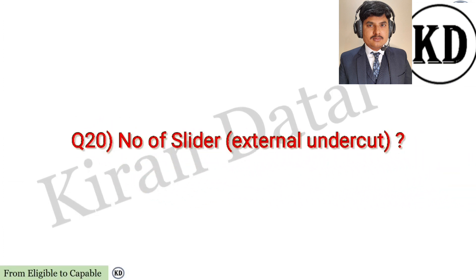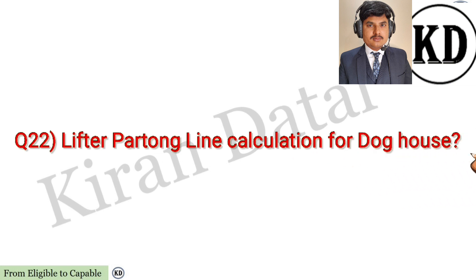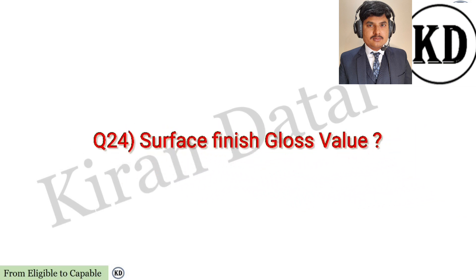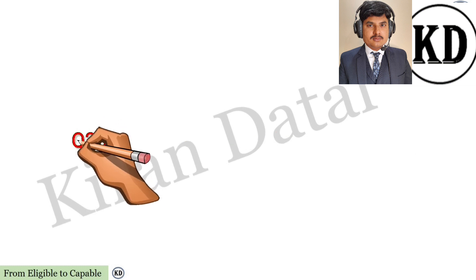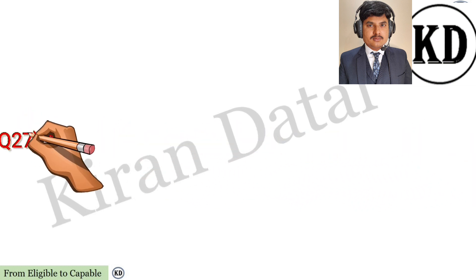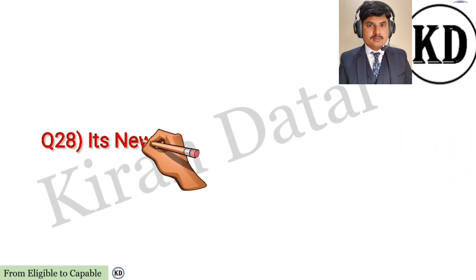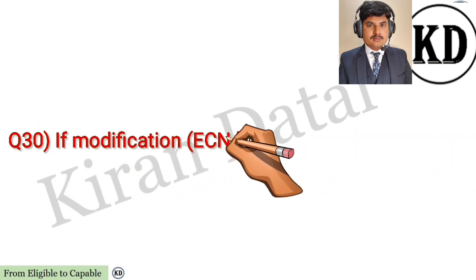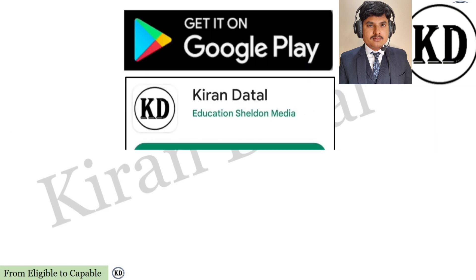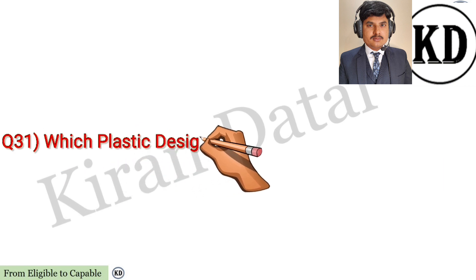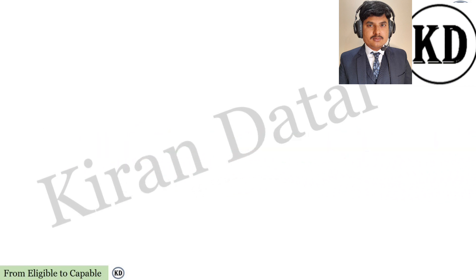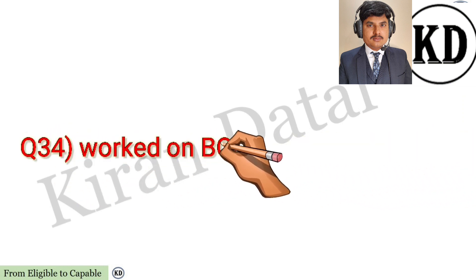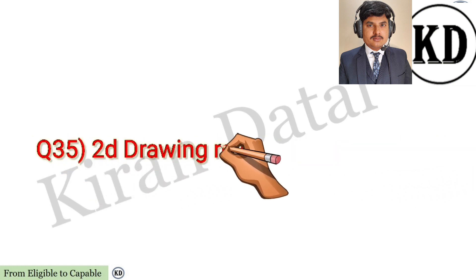Number of sliders for external undercuts, lifter parting line calculation for doghouse. Any idea about texture graining standard, surface finish gloss value, draft required to clear a surface, draft required for B-side features, assembly surrounding environment, whether the part is a new concept, style, or modification, challenges faced during the project, if modification — EC and DC raised by which department. Which plastic design guideline was followed in this project, tolerance values, gap and flush values, experience on BOM if yes list out.